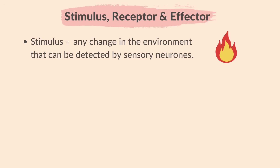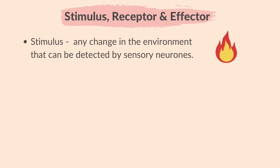Next, we must learn the meanings of stimulus, receptor, and effector in order to understand the pathway of an impulse in the nervous system. A stimulus is any change in the environment that can be detected by sensory neurons, such as light, sound, touch, temperature, or chemicals. Let's consider fire for this example.